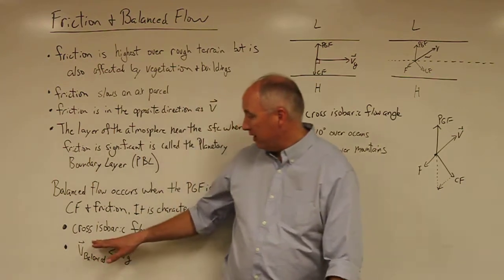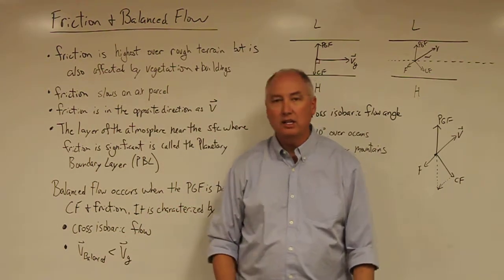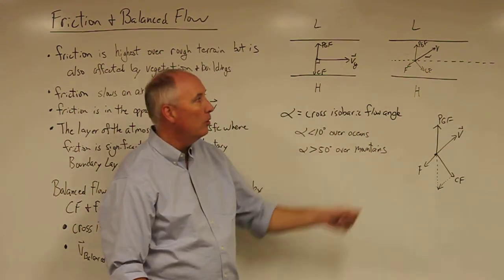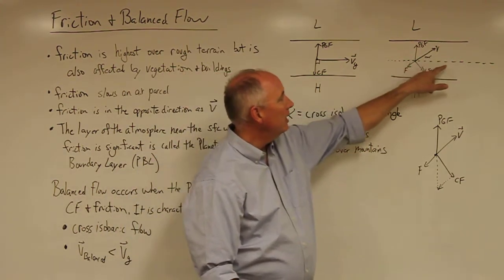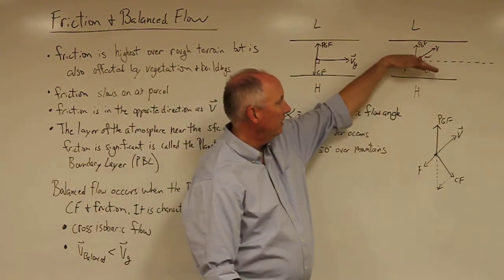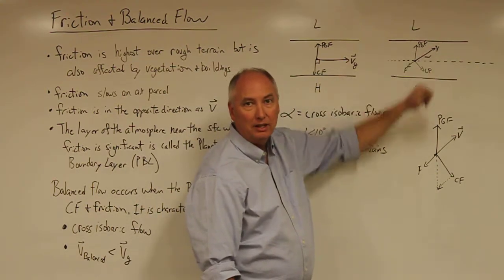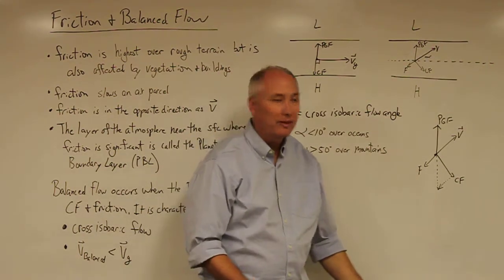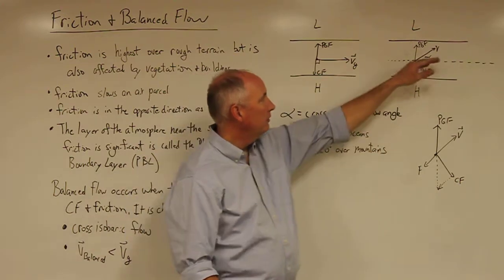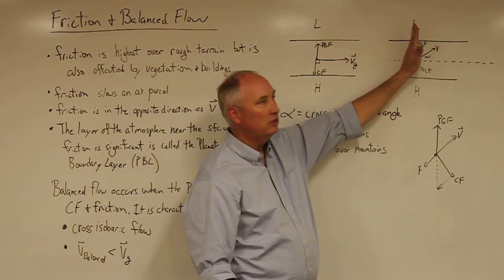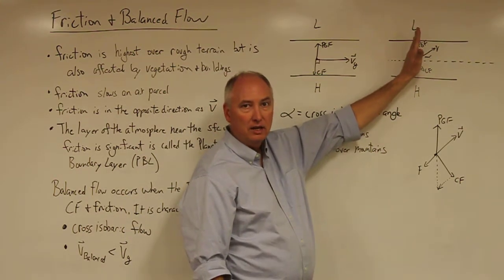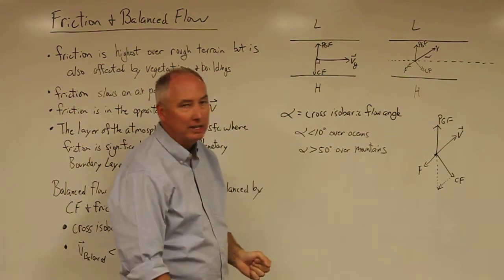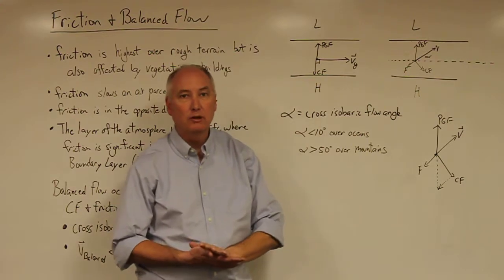We mentioned over here that the balance flow results in cross isobaric flow. We define the cross isobaric flow angle as the deviation between the velocity vector and the line that is parallel to the isobars. So in this case, the cross isobaric flow angle is about 45 degrees. If the velocity vector were pointing straight across, it would be a cross isobaric flow angle of 90. And the geostrophic wind, by definition, has a cross isobaric flow angle of 0.